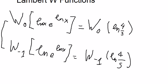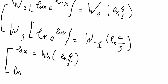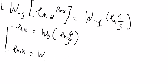So you get ln s equals to W_0 of ln 4 over 5, and ln s equals to W_{-1} of ln 4 over 5.